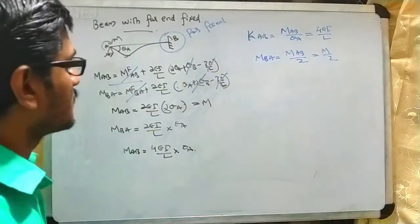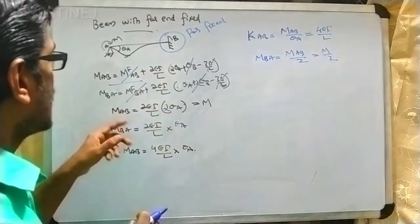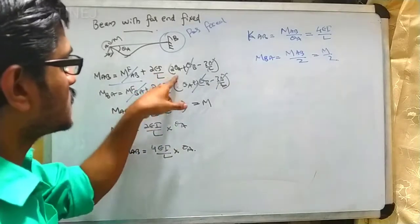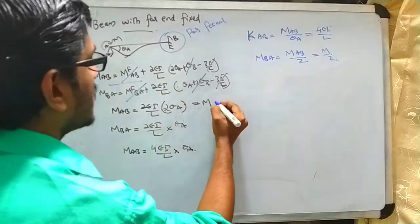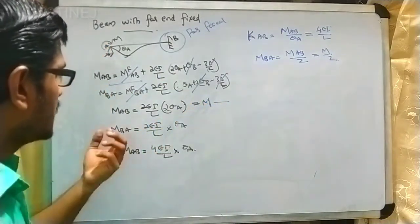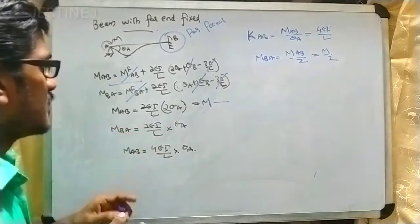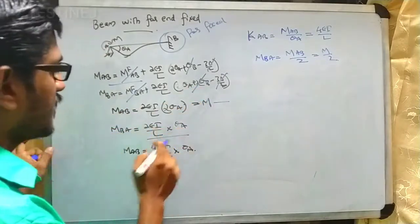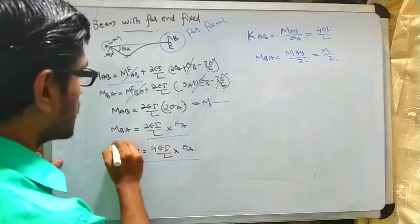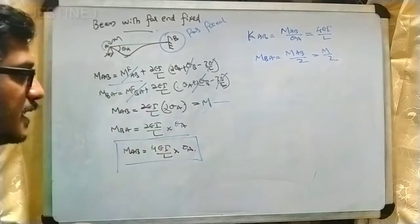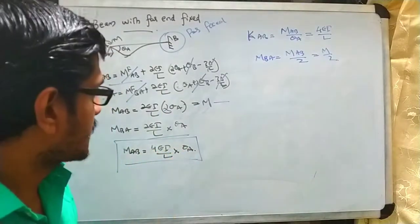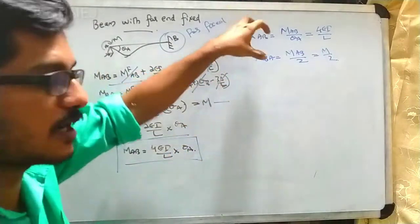With θ_b = 0, M_AB = (2EI/L)(2θ_a) = M. For M_BA, substituting gives (2EI/L)·θ_a. Multiplying through, M_AB = (4EI/L)·θ_a.